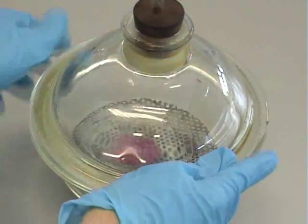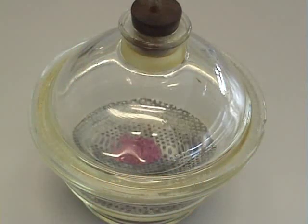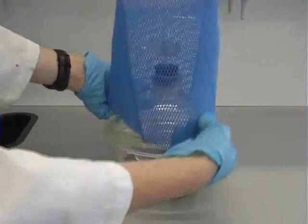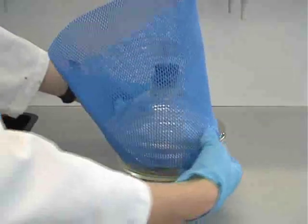The lid is then slid on, ensuring a firm seal, and the blue safety netting is put over the desiccator.